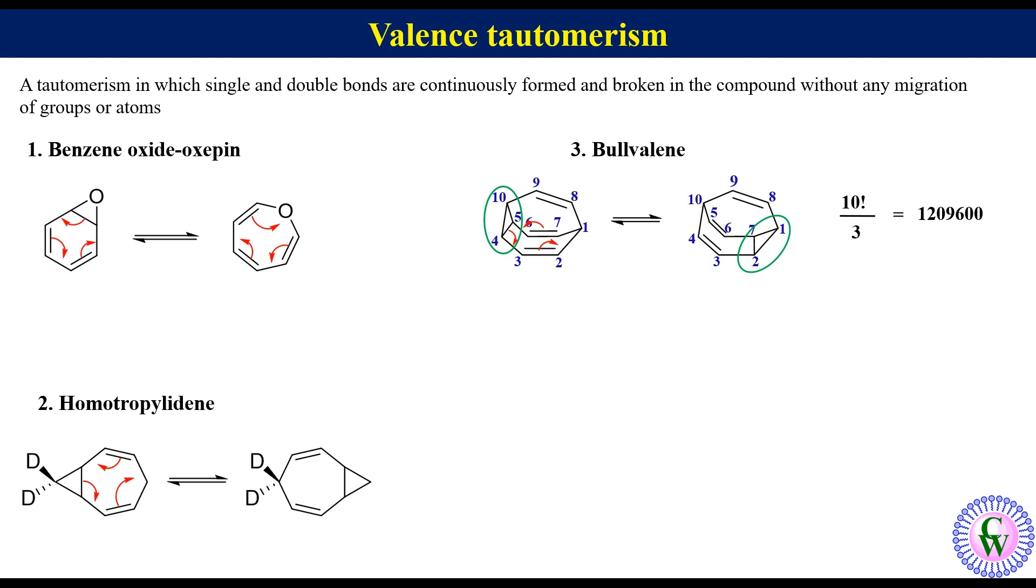The fourth and last example is cyclooctatetraene. This is the planar structure of cyclooctatetraene. It has boat-shaped structure. Under thermal conditions, it undergoes disrotatory electrocyclic ring closing process to produce this bicyclic compound.